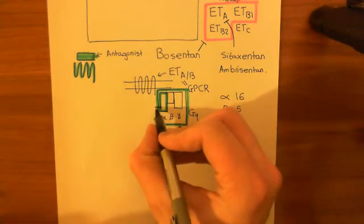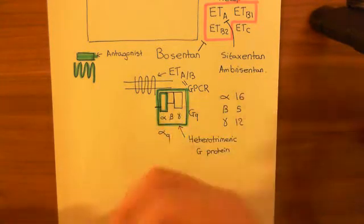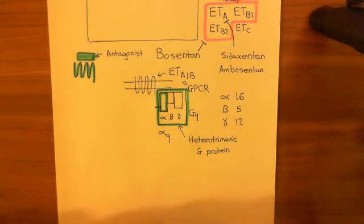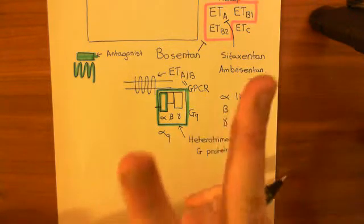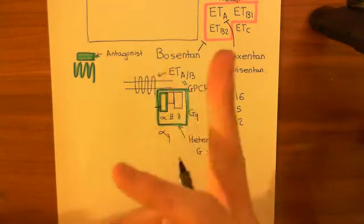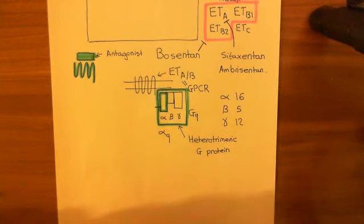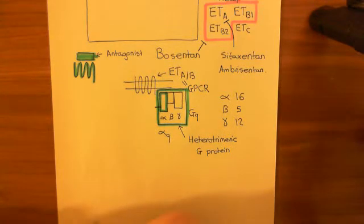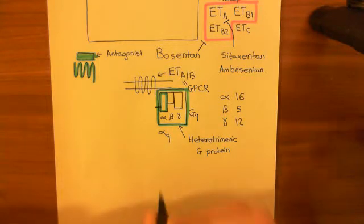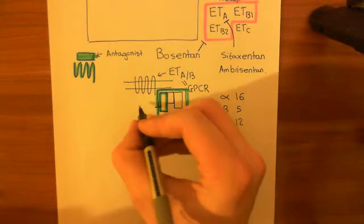Heterotrimeric G proteins, and in fact all G proteins, have two states: an on state and an off state. In the on state, they are bound to GTP, guanosine triphosphate, and in the off state, they are bound to guanosine diphosphate, GDP.